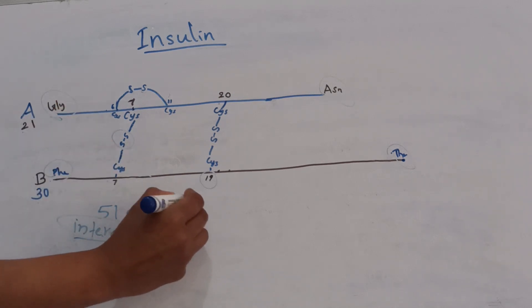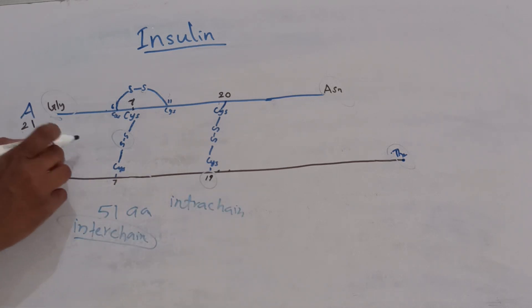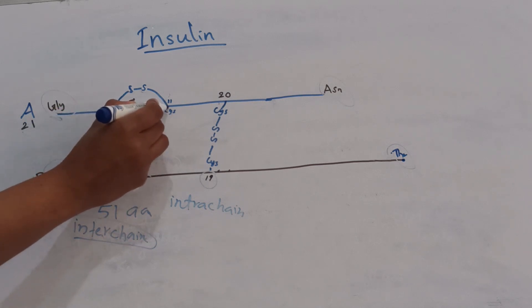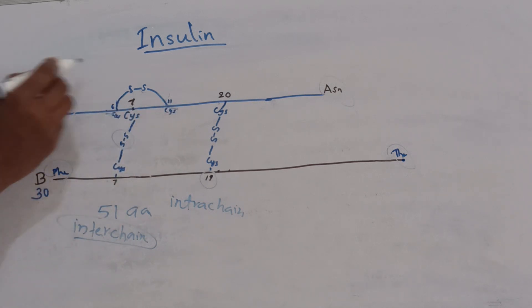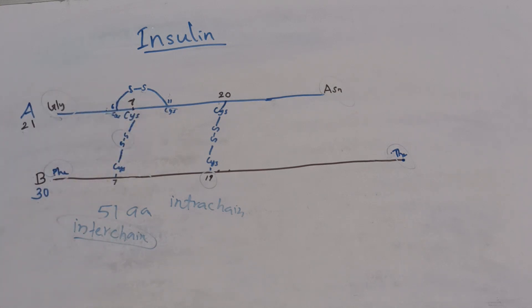an intra-chain disulfide linkage is present between the 6th and 11th amino acid of A chain.